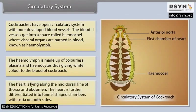The heart lies along the mid-dorsal line of the thorax and abdomen. The heart is further differentiated into funnel-shaped chambers with ostia on both sides.